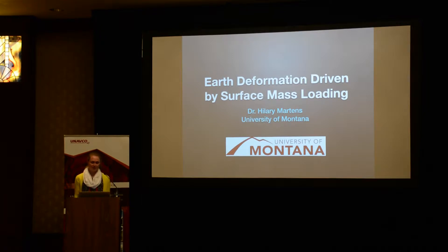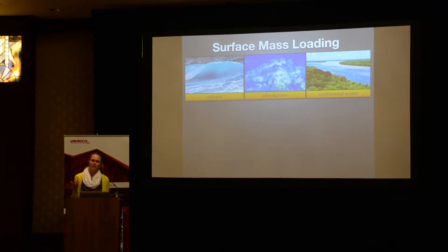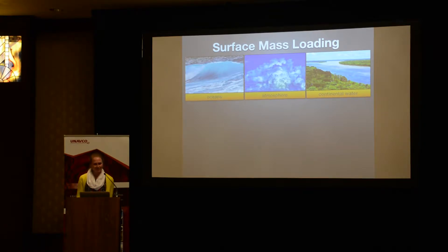Broadly defined, surface mass loading is the process by which masses largely external to the solid earth apply pressure to the surface. Examples of loads include the oceans, the atmosphere, and continental water, such as surface and ground water, mountains, snow, and glaciers.